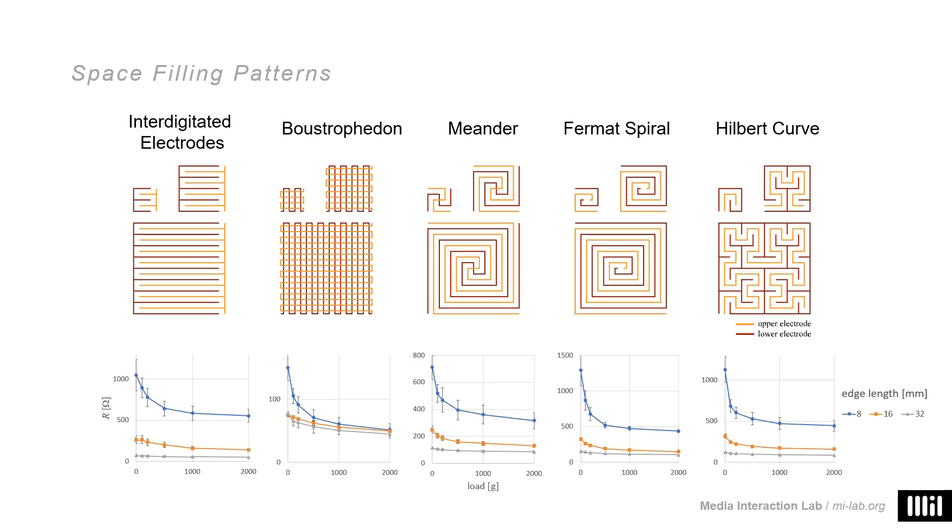In terms of characteristics, they all perform similar; however, in vastly different ranges. Just to pick the most outstanding one as an example, which is the boustrophedon. With its many intersections, it has a very low resistance, starting at only 150 ohms at rest for the Order 2 implementation, in contrast to the Fermat with almost 10 times the resistance at the same size. This will probably have implications on the choice of your electronics.